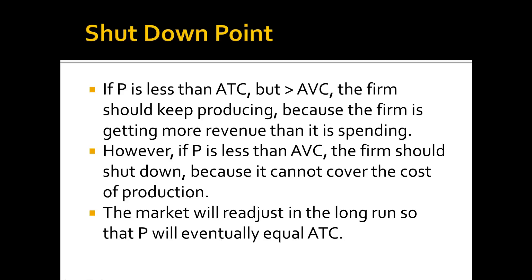However, if the price of the good is lower than the average variable cost, the firm should shut down because it's spending more money producing goods than it's taking in. This is the shutdown criteria: if price is less than average variable cost, the firm should shut down. In this case, by producing, the firm loses even more money than just its fixed costs, because it also loses money by producing.